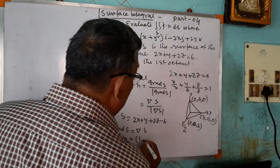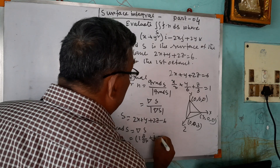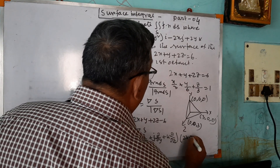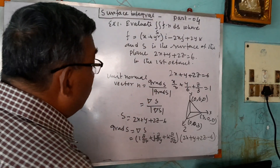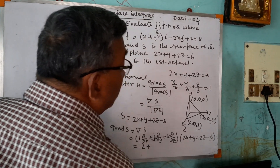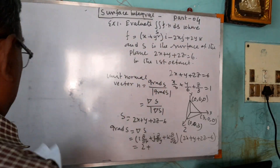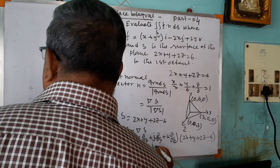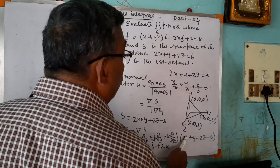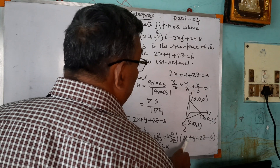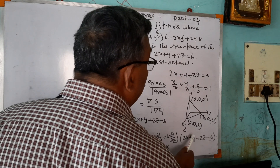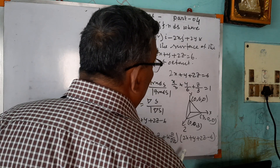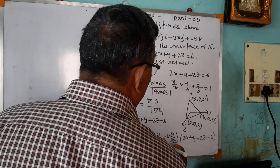The gradient operator is: ∇ = i(∂/∂x) + j(∂/∂y) + k(∂/∂z). Applying this to s = 2x + y + 2z − 6: ∂s/∂x = 2, ∂s/∂y = 1, ∂s/∂z = 2; all other partial derivatives of the constants are zero. So grad s = 2i + j + 2k.